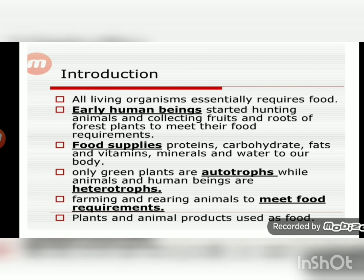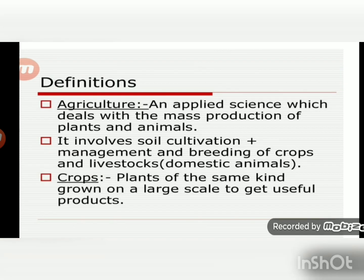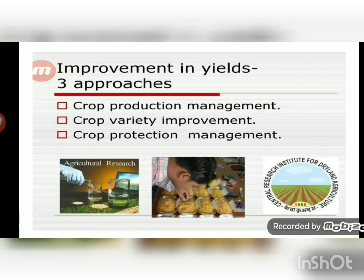Agriculture is an applied science which deals with the mass production of plants and animals. It involves soil cultivation, management, and breeding of crops and livestock — that is, domestic animals. A crop means plants of the same kind grown on a large scale to get a useful product. Plants and animal products are used as food, and to get food from plants we do agriculture.